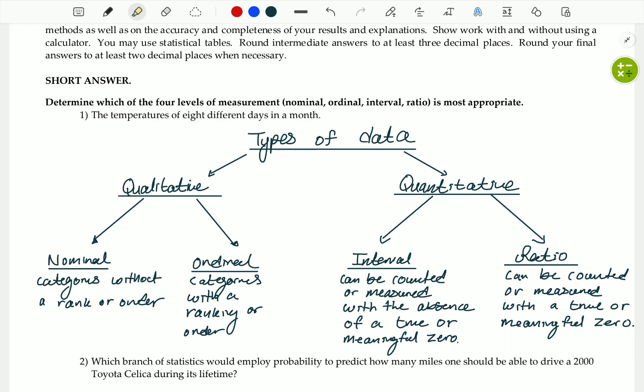So it says here the temperatures of eight different days in a month. Temperature is quantitative. It is quantitative because we can measure temperature. So that means it can either be interval or it can be ratio. You must ask yourself, does this variable of temperature have a true zero? Does zero degrees mean that there is no temperature? And that is false. Zero degrees does not mean that there is no temperature.